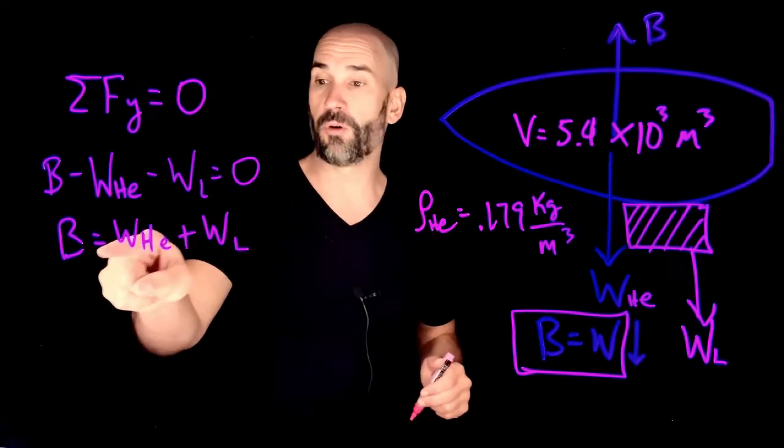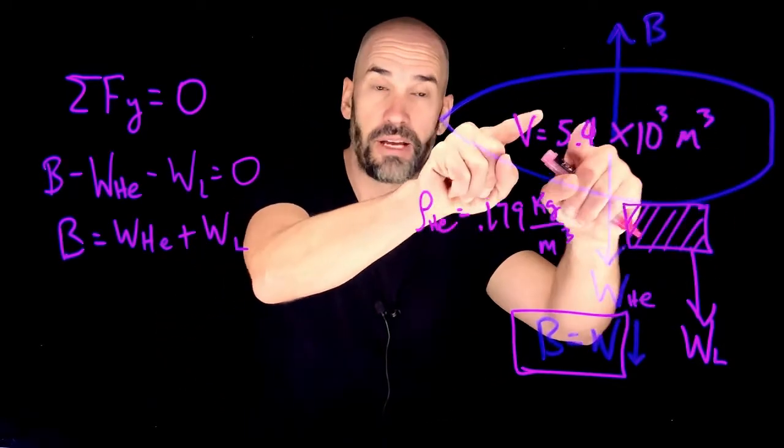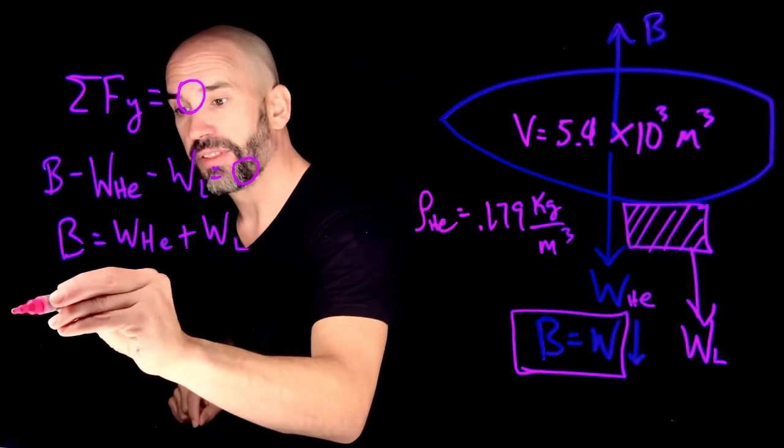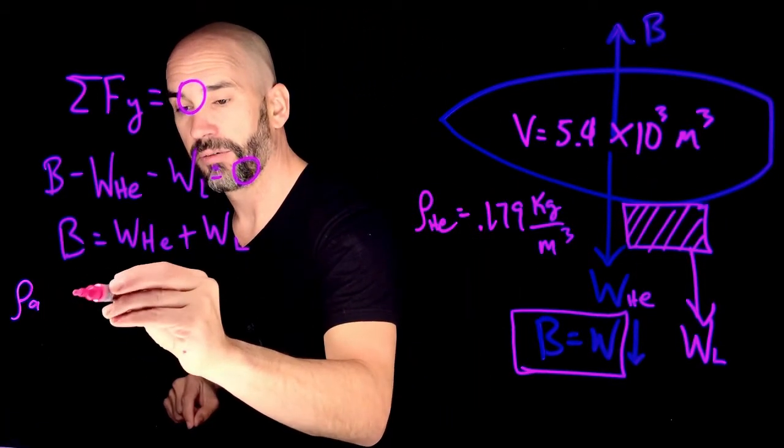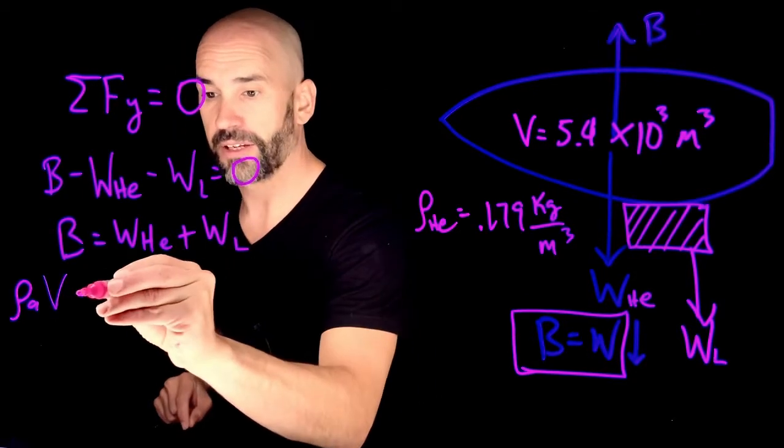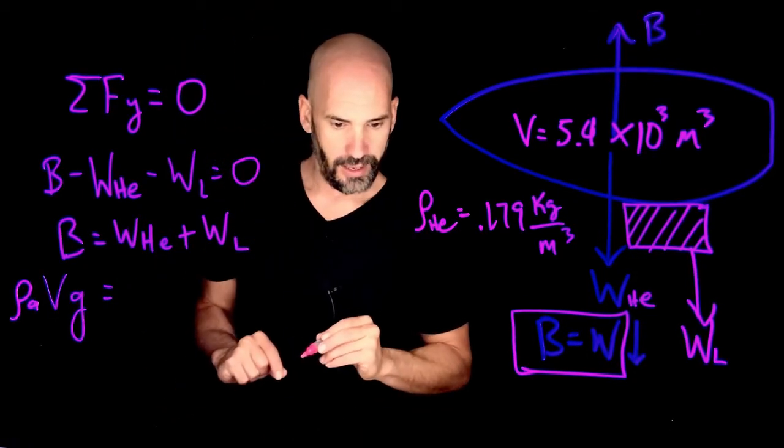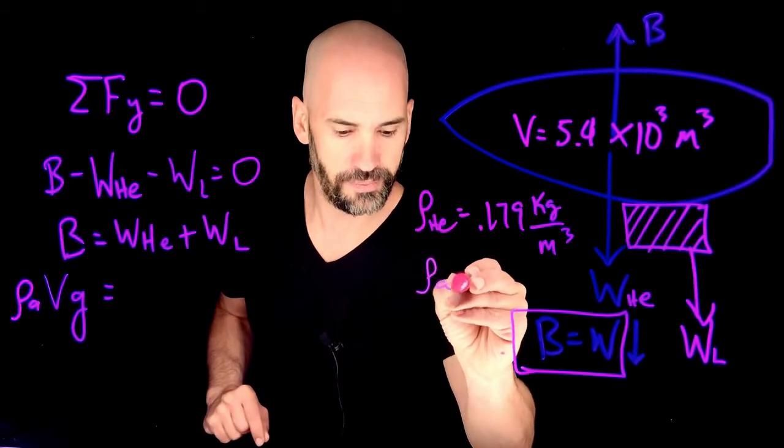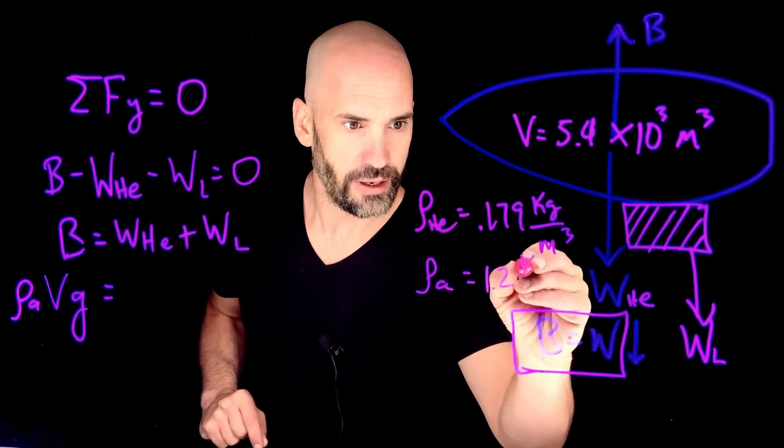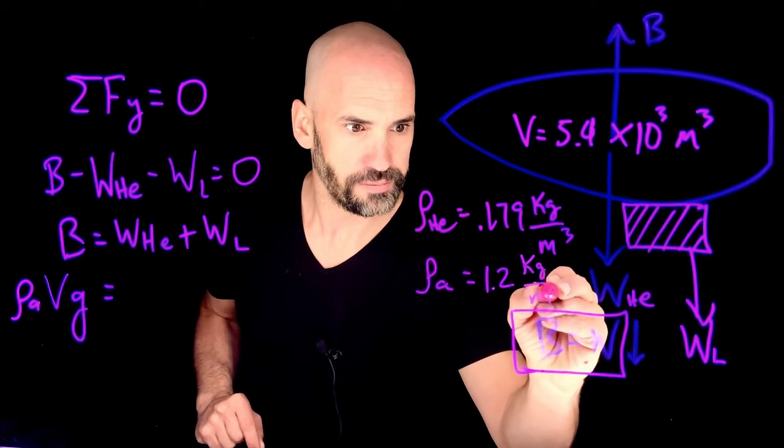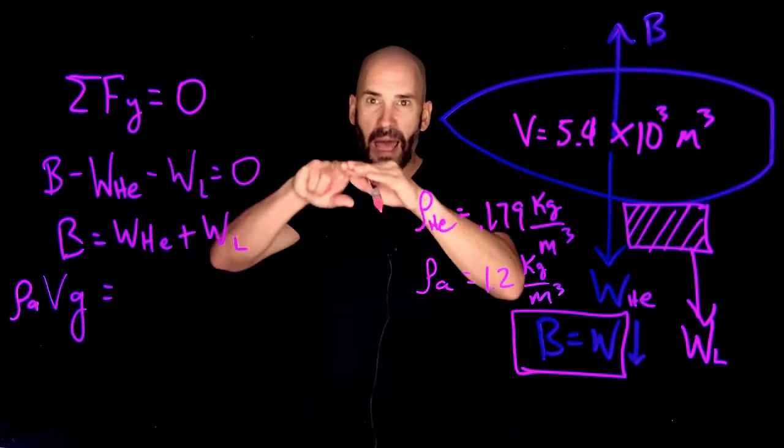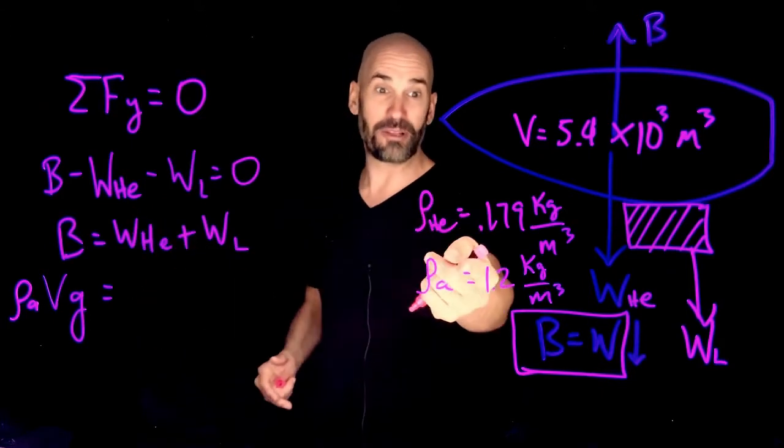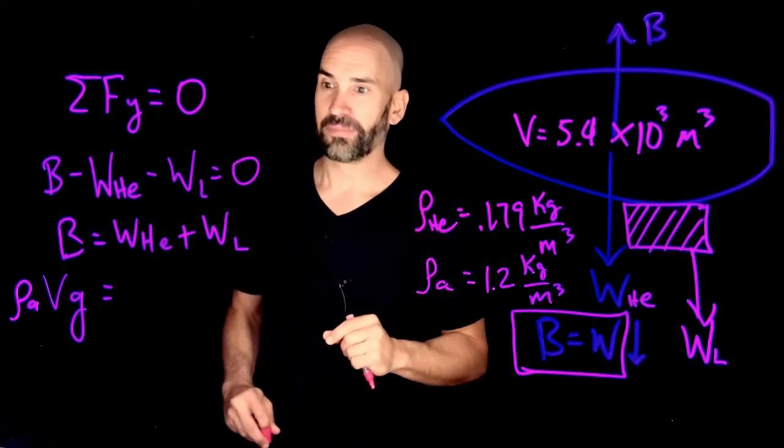Now, what is the buoyant force? Well, the buoyant force is the weight of the air that would have been here in this volume. So that's going to be the density of air times the volume of the Zeppelin times gravity. And they tell us also the density of the air in this problem is 1.2 kilograms per meters cubed. So that's interesting. That means that if you have an empty box that's a meters cubed, the air in there actually still weighs 1.2 kilograms. That's not trivial.